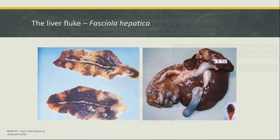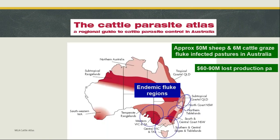Where does liver fluke occur? This is from the MLA cattle atlas showing the regions in Australia where we get liver fluke — purely where the snail, Ostrompolia tomentosa, lives. Interestingly, Western Australia has the intermediate host present but has quarantine measures requiring livestock moved from the eastern states to be drenched first, making Western Australia liver fluke free. All the affected areas correspond to where the snail lives, and that's why infections occur there.